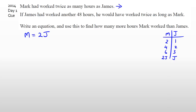The second line is where things start getting a bit complicated, but you can simplify. It says if James had worked another 48 hours — so we've got James, whatever hours he worked, plus 48 hours — he would have worked twice as long as Mark. That means j plus 48 equals 2 times m. That's your second equation, and that's basically all you need for forming the two equations.